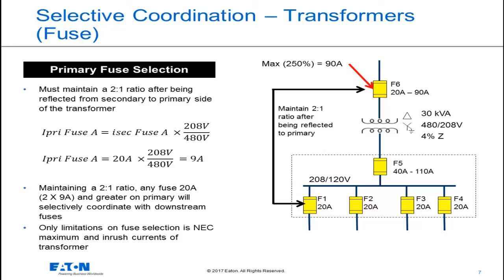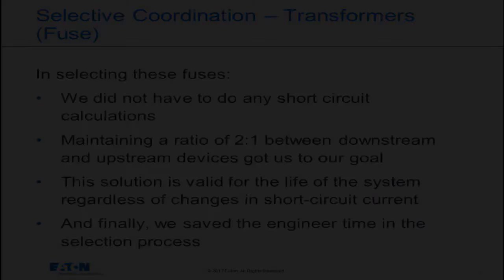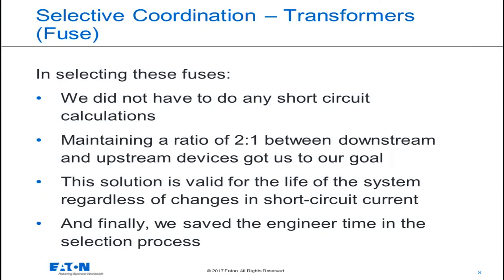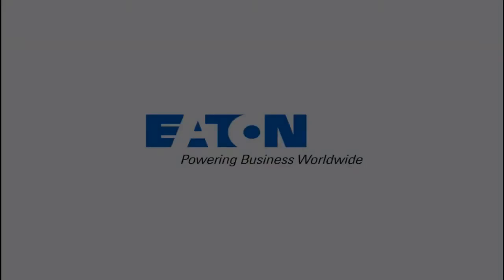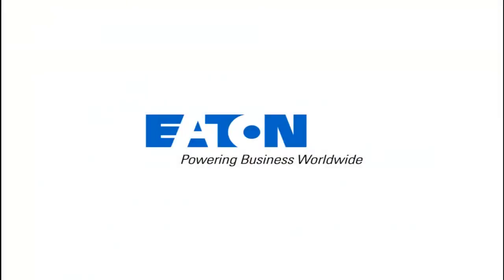The only limitations on selecting the primary fuse are the NEC maximum and the inrush currents of the transformer. In selecting these fuses, we simplified the process of protecting a transformer while meeting code requirements and achieving selective coordination. We did not have to do any short circuit calculations — we simply maintained a 2 to 1 ratio between downstream and upstream fuses. This solution is valid for the life of the system, regardless of changes in short circuit current. Thank you for taking time to discuss this technical topic.